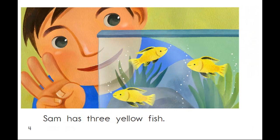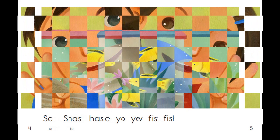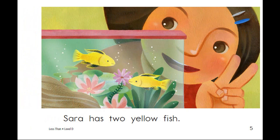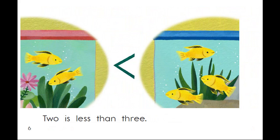Sam has three yellow fish. Sarah has two yellow fish. Two is less than three.